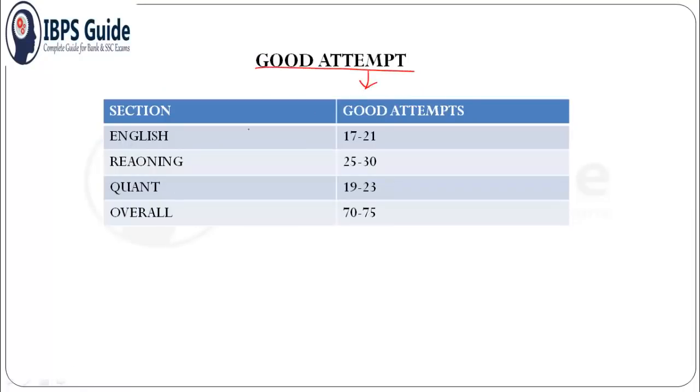First of all, let's review the good attempts. For English, good attempts varied between 17 to 21. For reasoning ability 25 to 30, and quant section 19 to 23. Overall, good attempts varied between 70 to 75. This fourth slot was of moderate level compared to the other three previous slots.